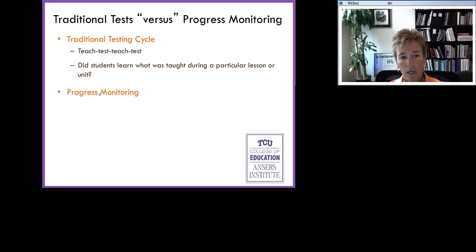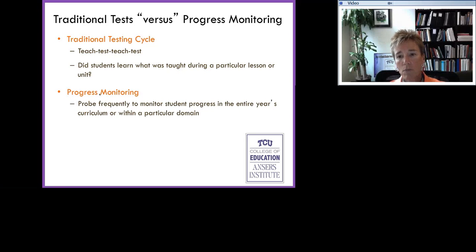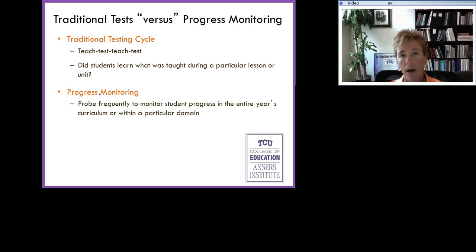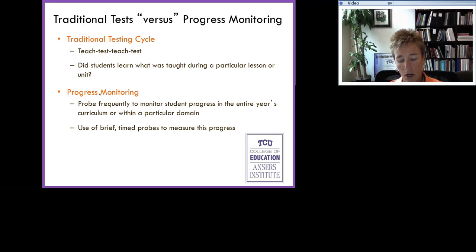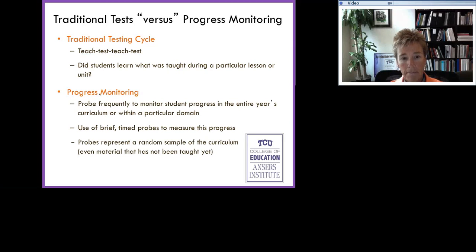In progress monitoring, we probe frequently to monitor students' progress in the entire year's curriculum, or at the secondary level within a particular domain — for example, Algebra 1, Biology, or Calculus 1. We use brief timed probes to measure students' progress, and quite often curriculum-based measures are used because they are brief and timed. The probes represent a sample of the entire year's curriculum, even material that hasn't been taught yet — that's much different than our traditional way of assessing after we had taught the material.